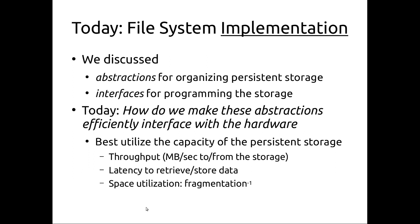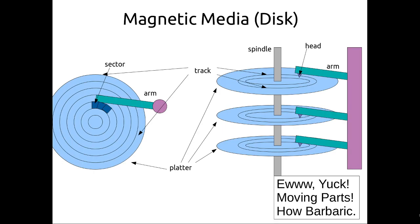I'm going to start by talking about disks. Disks are somewhat antiquated but are an interesting test case and still very important. On the right you see an artistic rendition of a disk with a spindle that has three platters. Within each platter there are concentric tracks, and each track is composed of sectors. Each sector is a unit of I/O — normally 512 bytes — and we can transfer a sector at a time using DMA to and from main memory.